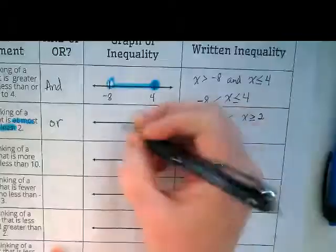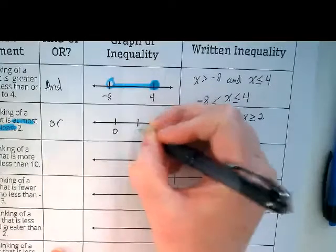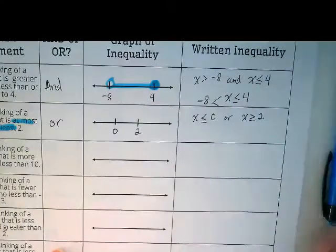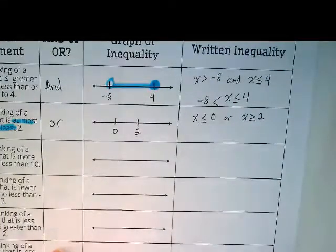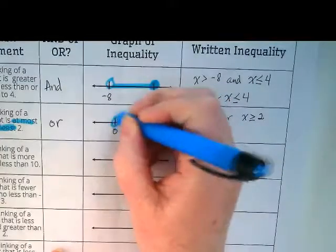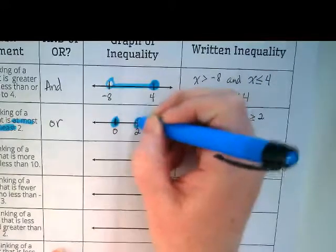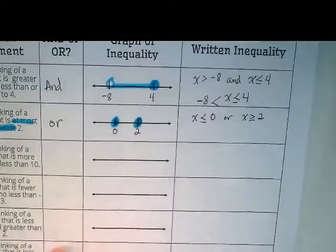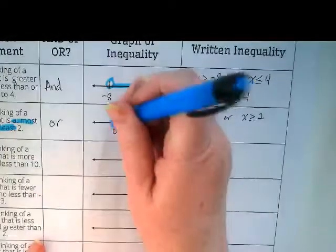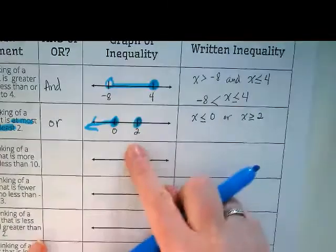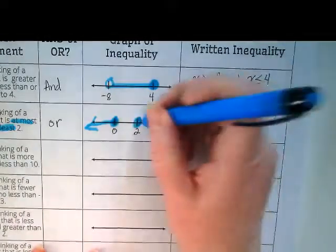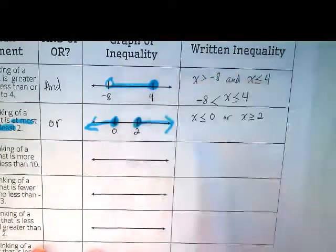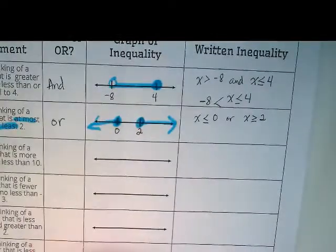So we're going to graph 0 and 2. Both of these are going to be filled in. And the arrow coming from the 0 is going to go to the left. And the arrow for the 2 is going to the right. Okay.